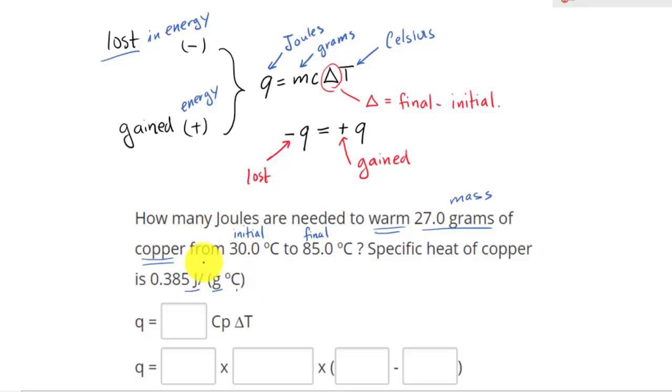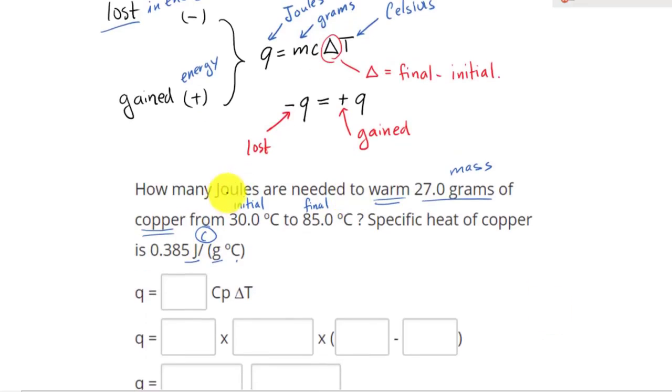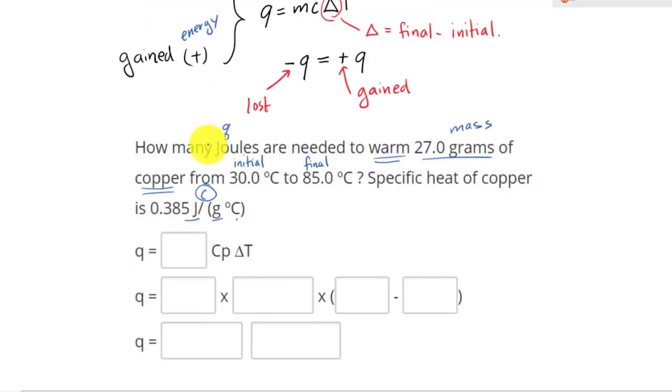And the specific heat of copper is 0.385 Joule over gram times Celsius. So this is your C right there. Now let's plug into this equation. It's asking for Joule, and Joule is represented by the variable Q. So in this case, we are solving for Q, and again, Q is equal to MCAT.